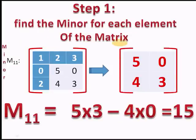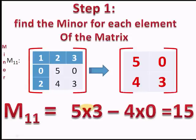What is a minor? The minor of element A11, which is 1, is represented by M11. To find the minor, we leave the row and column in which the element belongs. The number 1 belongs to the first row and first column, leaving elements 5, 0, 4, and 3. Cross-multiplying: 5×3 minus 4×0 gives 15. So M11 is 15.